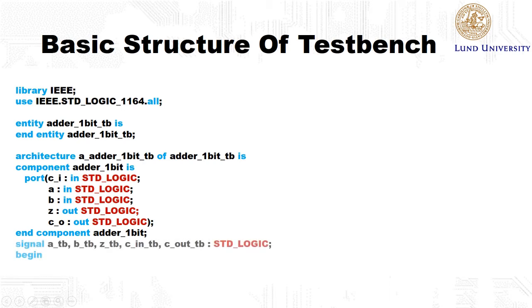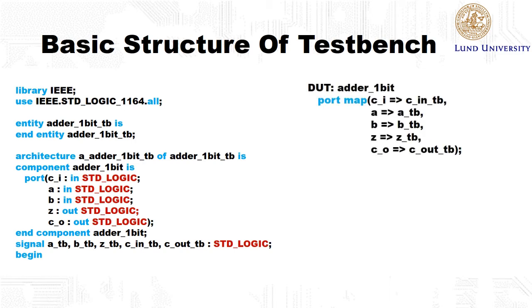To be able to generate inputs and also view the outputs of this component, we need to have some signals or wires that we can connect to it. Here we declare five signals of type std_logic. Then in the architecture we instantiate the component that we'd like to test and specify how it should be connected to signals within this test bench.